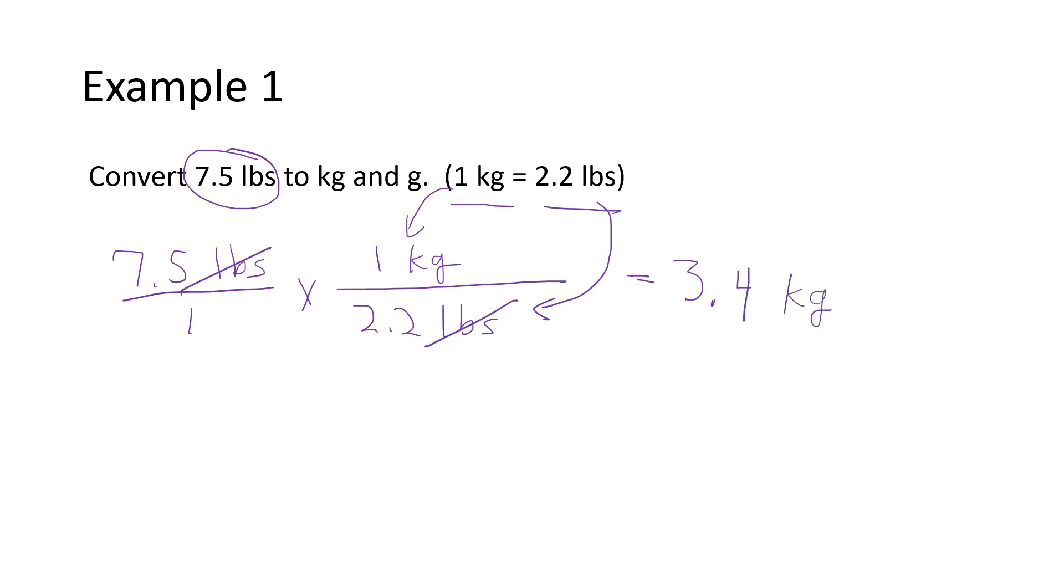Now to convert that to grams, kilo means a thousand. So 3.4 kilograms is the same thing as 3.4 thousand grams or 3,400 grams.